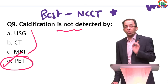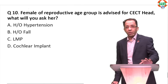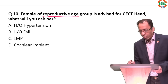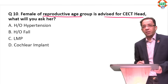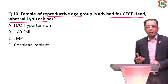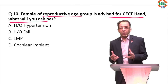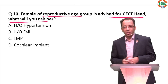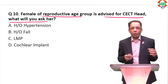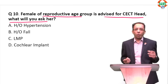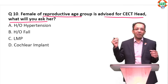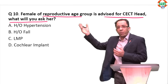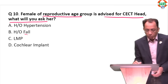Final question — common sense: a lady of reproductive age is advised a CT scan. What will you ask her? CT scan involves radiation exposure, which we want to avoid in pregnant ladies. So you ask for her LMP — last menstrual period — to rule out pregnancy. This is routine practice and a previous FMG question that can be repeated.